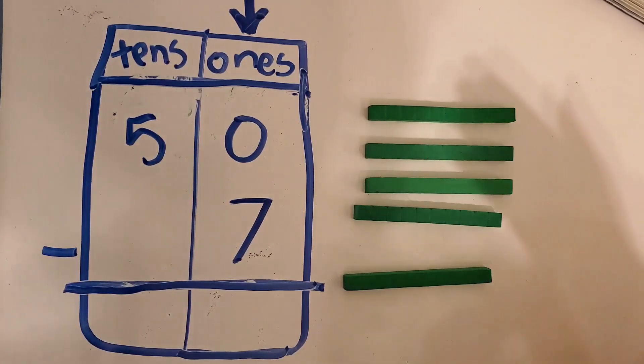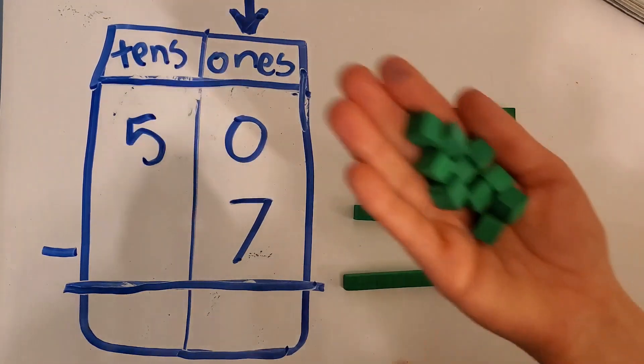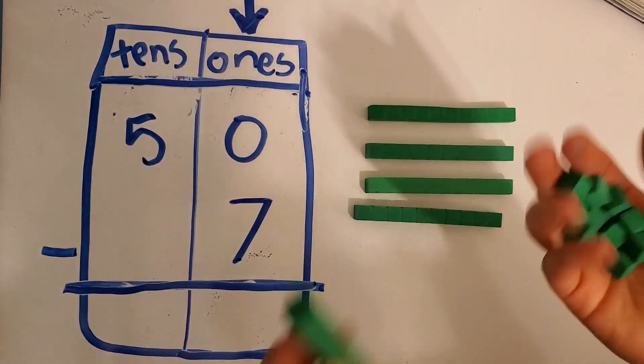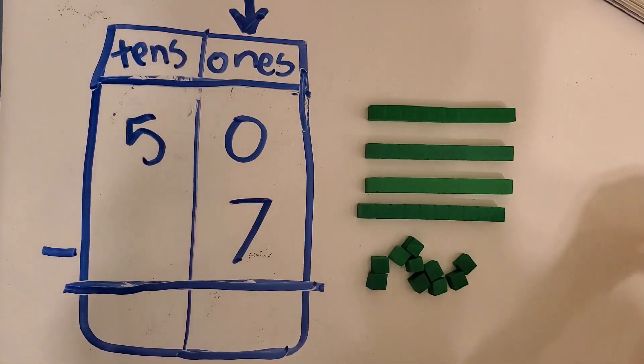So let's get ten ones. One, two, three, four, five, six, seven, eight, nine, ten ones and trade. So here I have ten ones. I'm taking away one ten. Even trade.